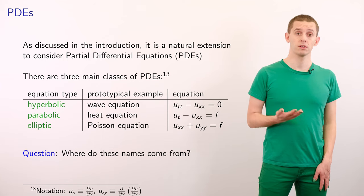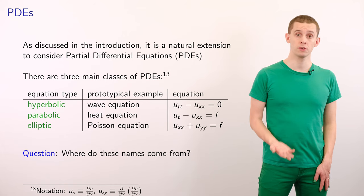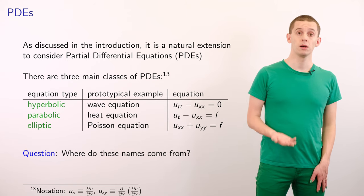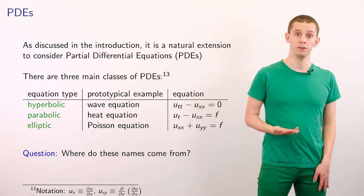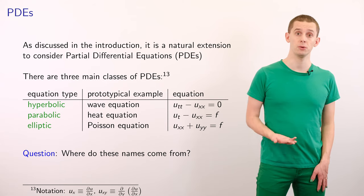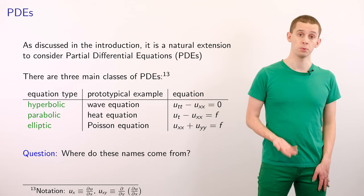The first class are hyperbolic PDEs, and here, a prototypical example would be the wave equation, where we're solving for a solution u that's a function of time t and space x, and it will satisfy the equation u_tt minus u_xx equals 0, where the subscripts refer to partial derivatives.